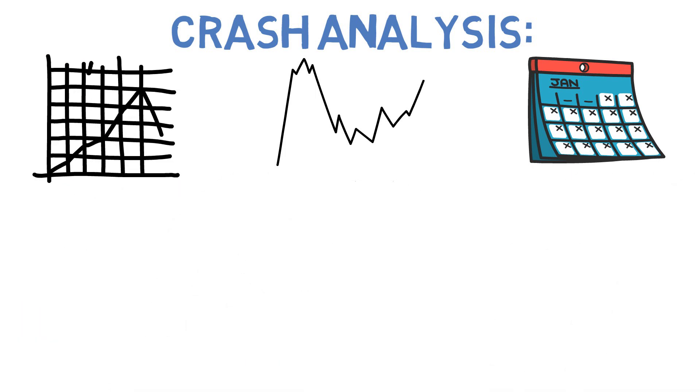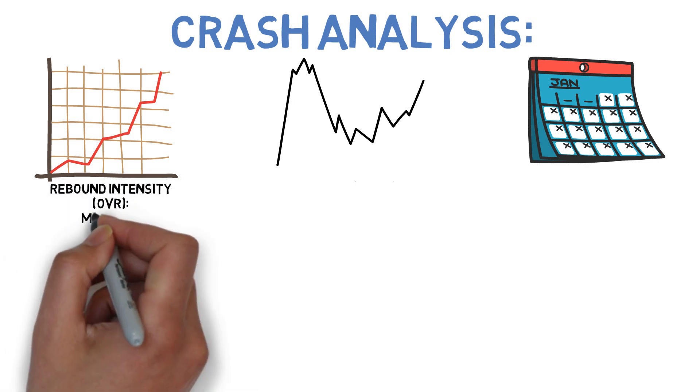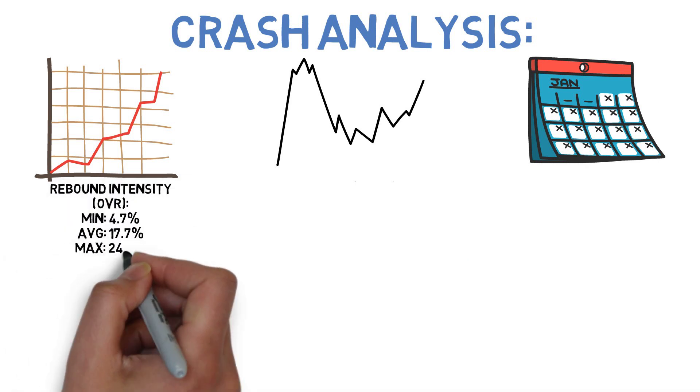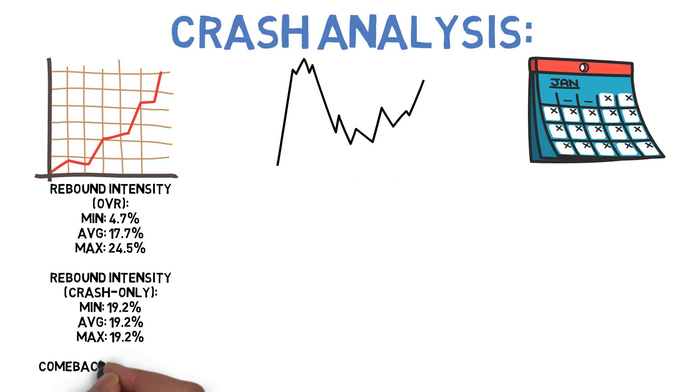In the year immediately after bottoming out, the Swenson portfolio had minimum, average, and maximum rebound intensities of 4.7%, 17.7%, and 24.5% respectively. If we filter those results to only look at how it bounced back following major market crashes of at least 20%, we see that it jumped by about 19.2% after the Great Recession, which was its one and only true crash.